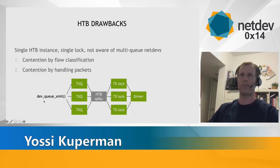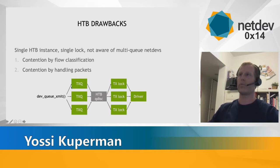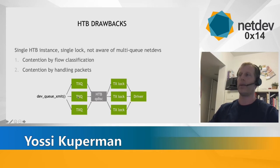However, HTB has some drawbacks. The current implementation does not scale well with the number of TXQs. In fact, HTB was written well before MultiQ was introduced. More specifically, all TXQs point to the same instance of HTB QDisc, which creates a synchronization point, missing the entire idea of MultiQ. Also note that both traffic classification and the shaping algorithm take place under this lock.